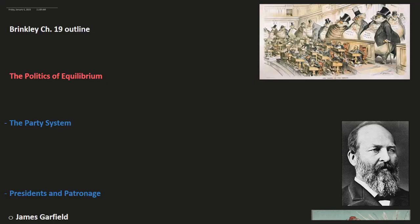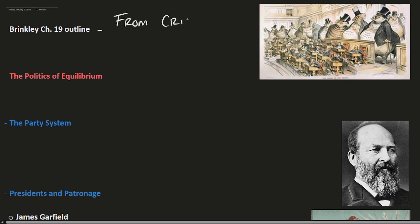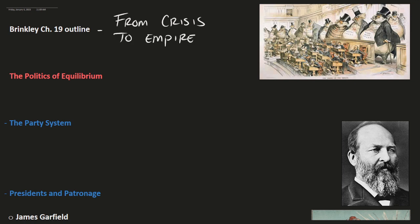We have Alan Brinkley's The Unfinished Nation, and we'll be looking at Chapter 19 here. Chapter 19 is called From Crisis to Empire. This chapter focuses on two separate things: the crisis, which is the culmination of everything that's been happening during the Gilded Age, and the empire aspect, which refers to American expansion overseas, otherwise known as imperialism.